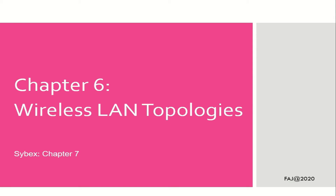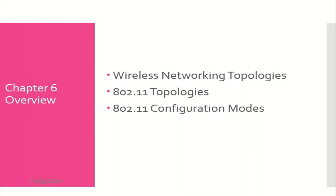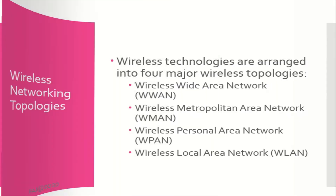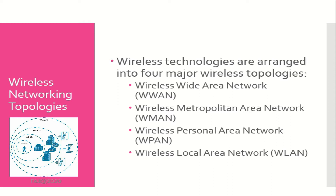Chapter 6: Wireless LAN Topologies. In this chapter, you will learn about the following. Wireless technologies are arranged into four major wireless topologies: first, Wireless Wide Area Network; second, Wireless Metropolitan Area Network; third, Wireless Personal Area Network; and the last one, Wireless Local Area Network.